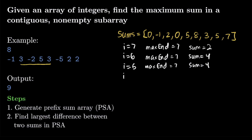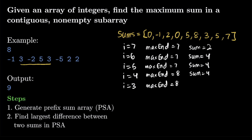At i equals 4, we see 8 is greater than 7, so max_end updates to 8. The sum is 8 minus 5 equals 3, which is less than 4, so we keep 4. At i equals 3, max_end stays 8 since 5 is less than 8. We take 8 minus 0 — because 0 is at index 3 — giving 8, which is greater than 4, so sum updates to 8.